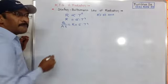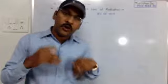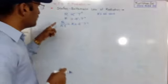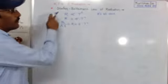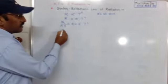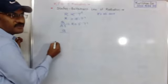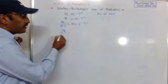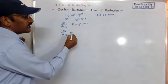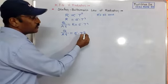For a perfect black body — which is a good absorber as well as a good emitter — the formula is: the amount of heat radiation emitted by the perfect black body per unit area per unit time is equal to σT⁴.